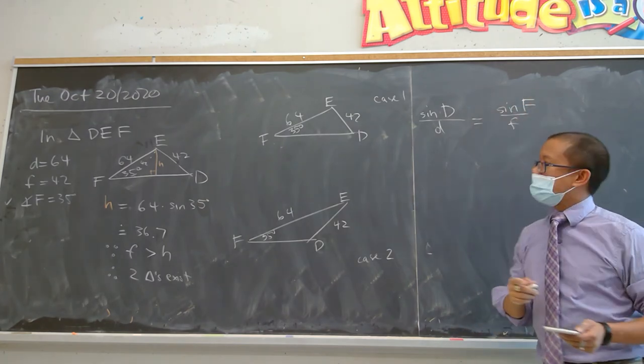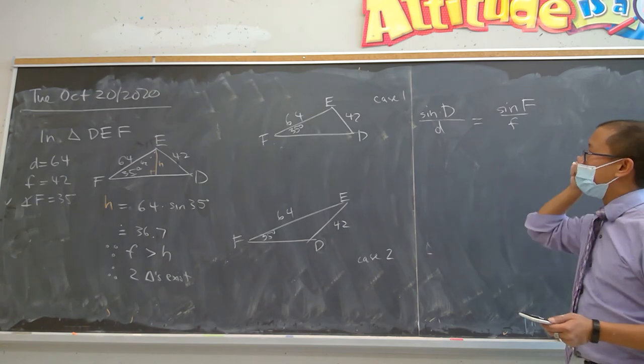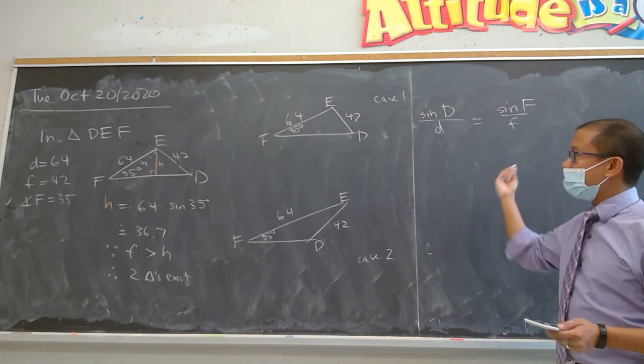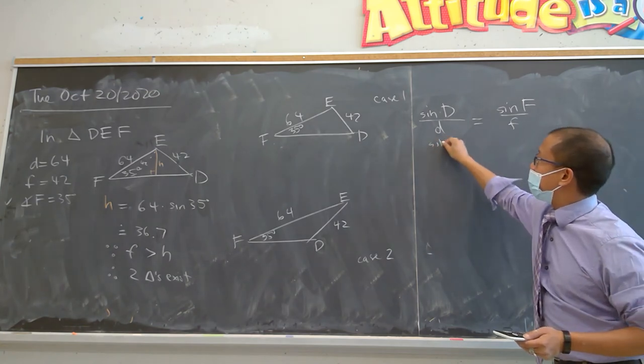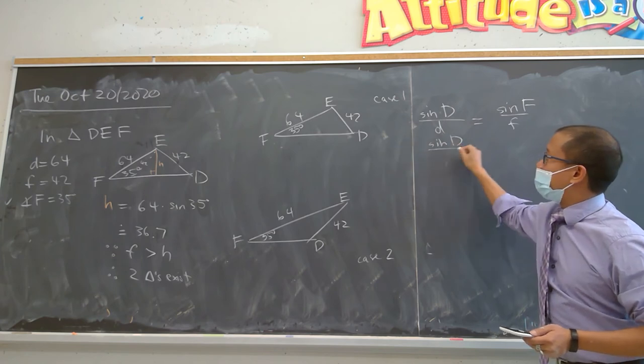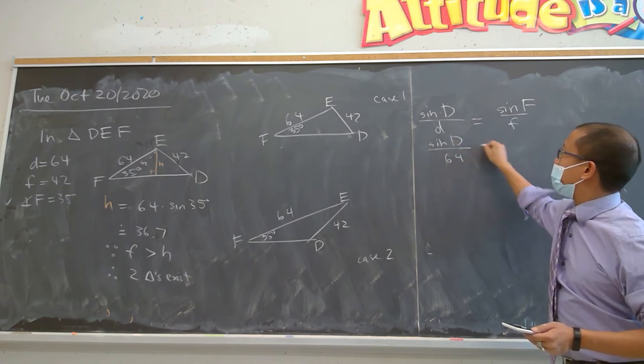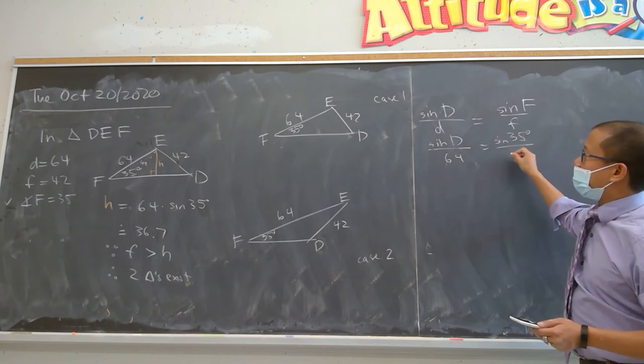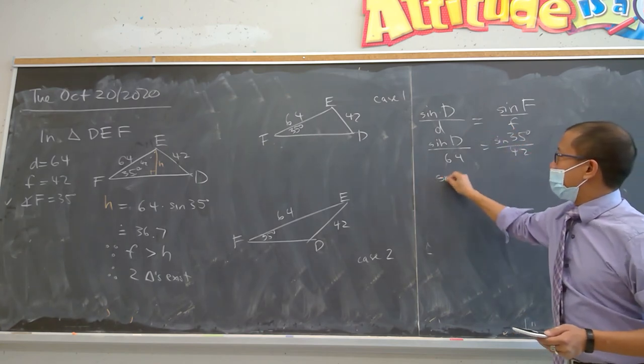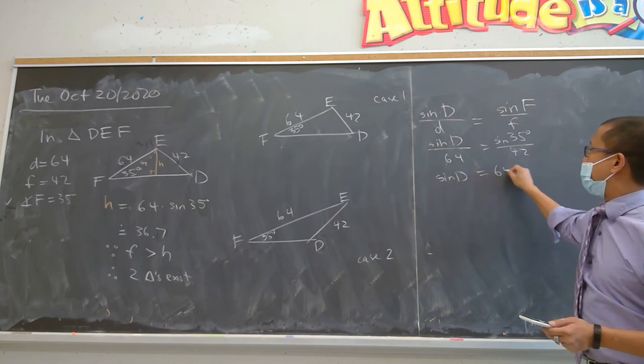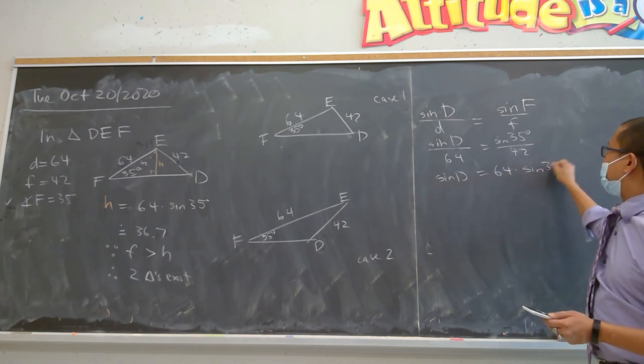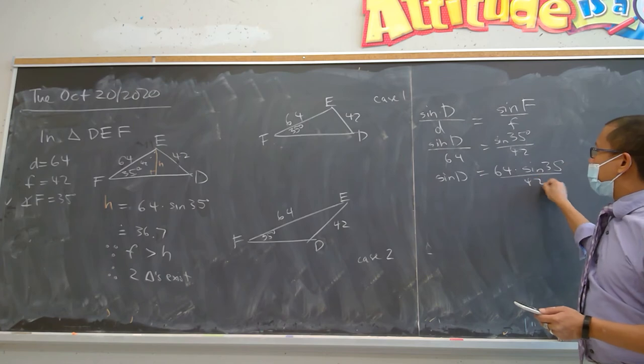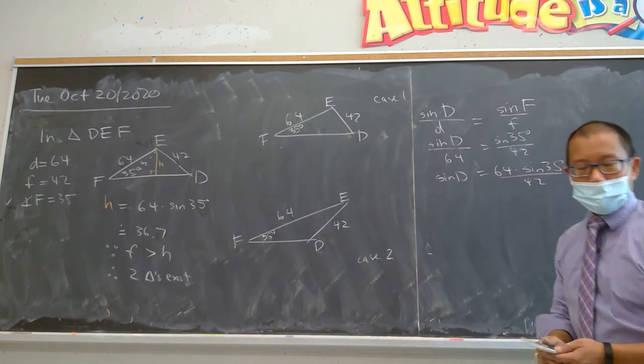The sine of D over D is equal to sine of F over F. And I might have to move the screen over, the video. Okay. Doing a quick substitution. The sine of D over 64 is equal to sine of 35 over 42. And the sine of D is equal to 64 times the sine of 35 over 42. I'm not running out of the room. Maybe I'll move this over now.